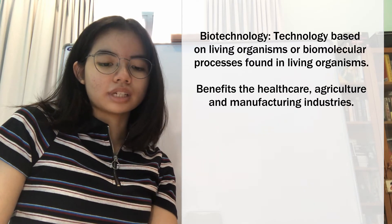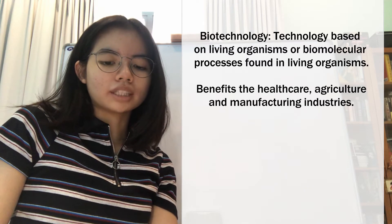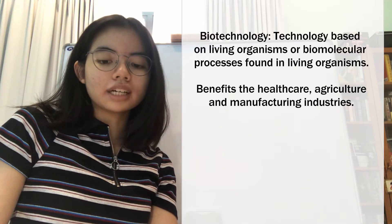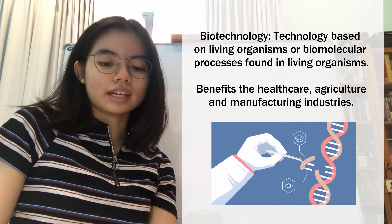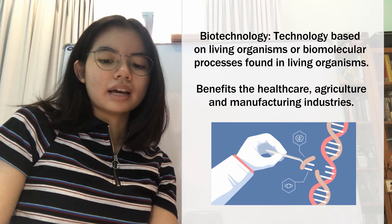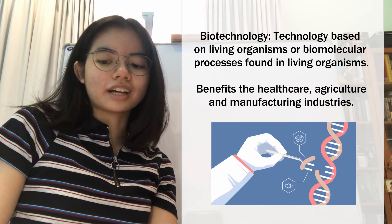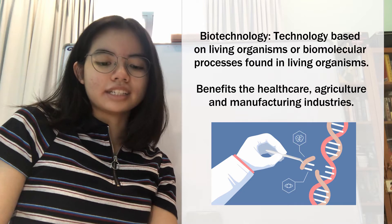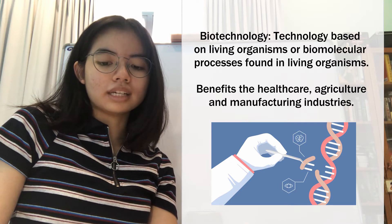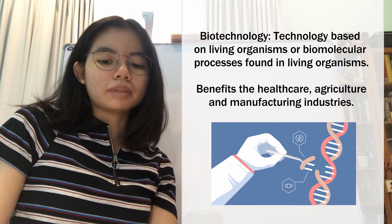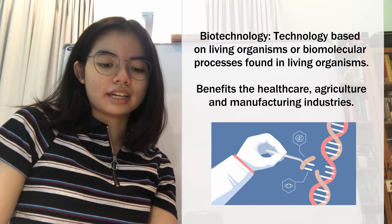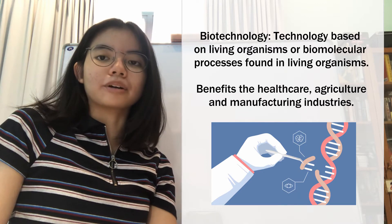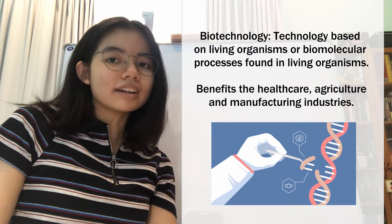Despite this long history, modern biotechnology is generally agreed to have started with the discovery of genetics and genetic engineering. The first publicly owned biotechnology company, Genentech, managed to harvest the hormone insulin from the pancreases of animals to produce diabetes medication on a large scale. So, how does this relate to chemical engineering?